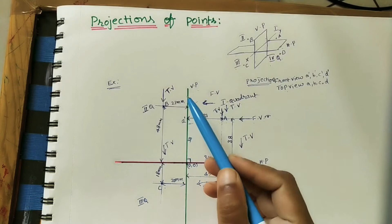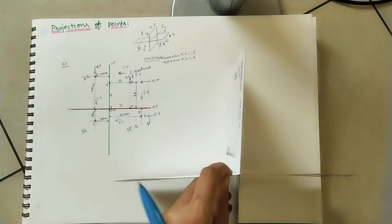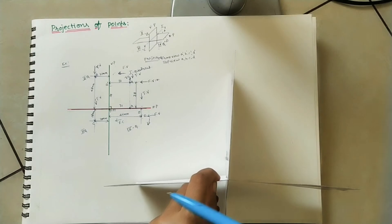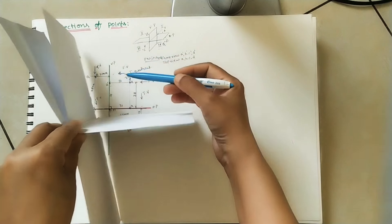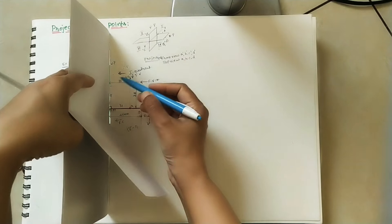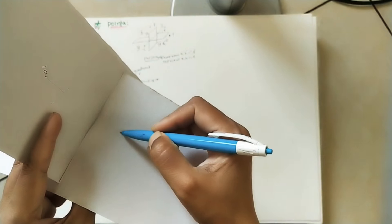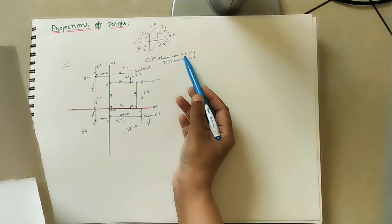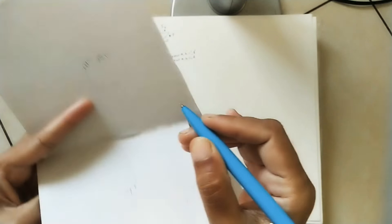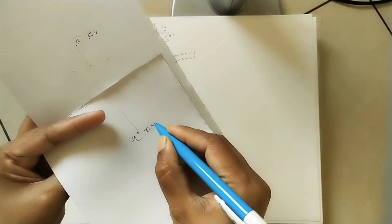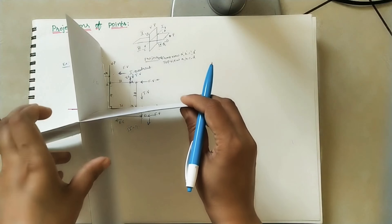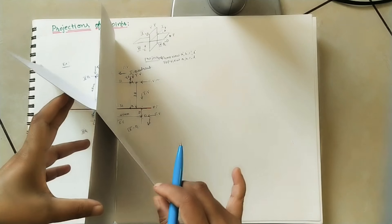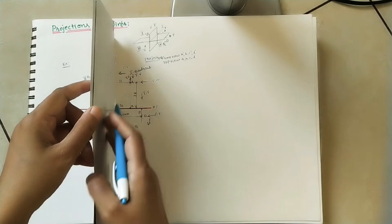For marking projections we cannot always use a right-angle triangle paper, so we convert to a 2D diagram. We tilt the horizontal plane downward so it coincides with the vertical plane. The part behind the VP moves upward and the part in front moves downward. The final result is a 2D drawing.